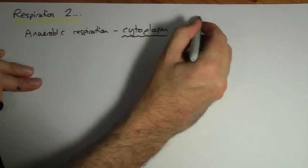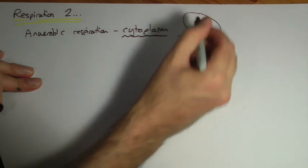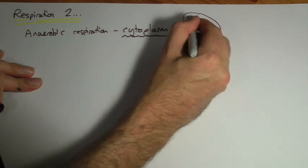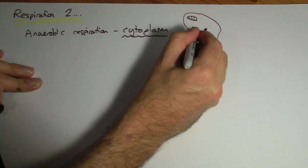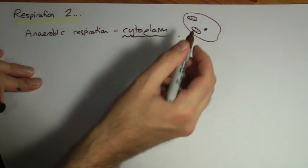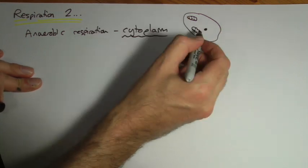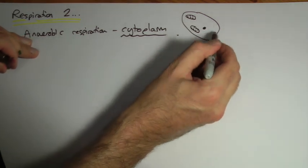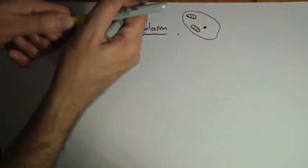If you remember, if you think of a cell, here's our cell roughly, there's our nucleus, we've got those mitochondria. That's where the aerobic respiration happens in the mitochondria. All this bit here, the rest of it is the cytoplasm.